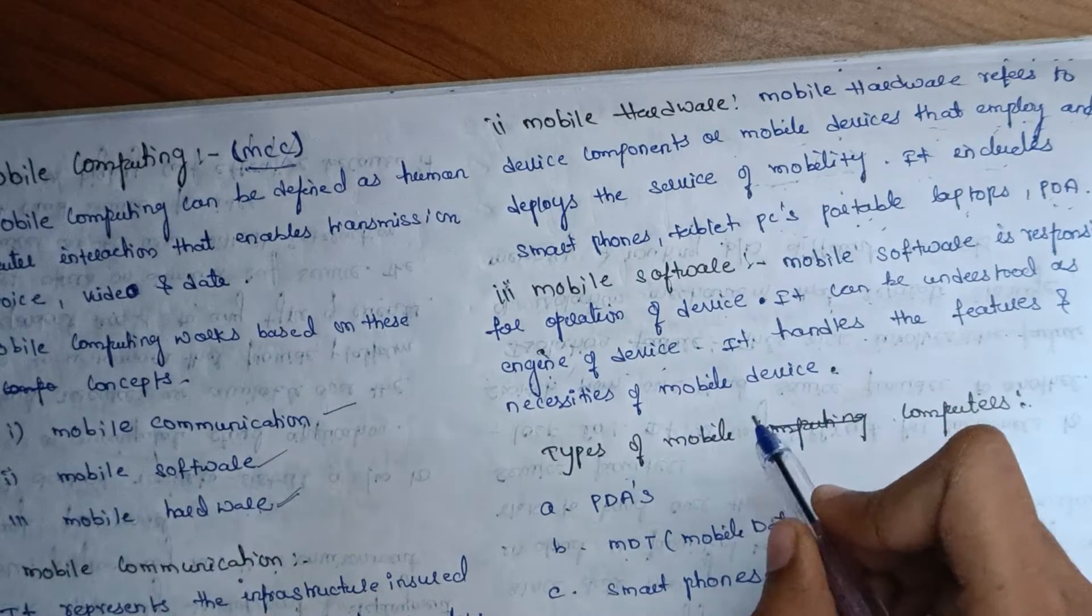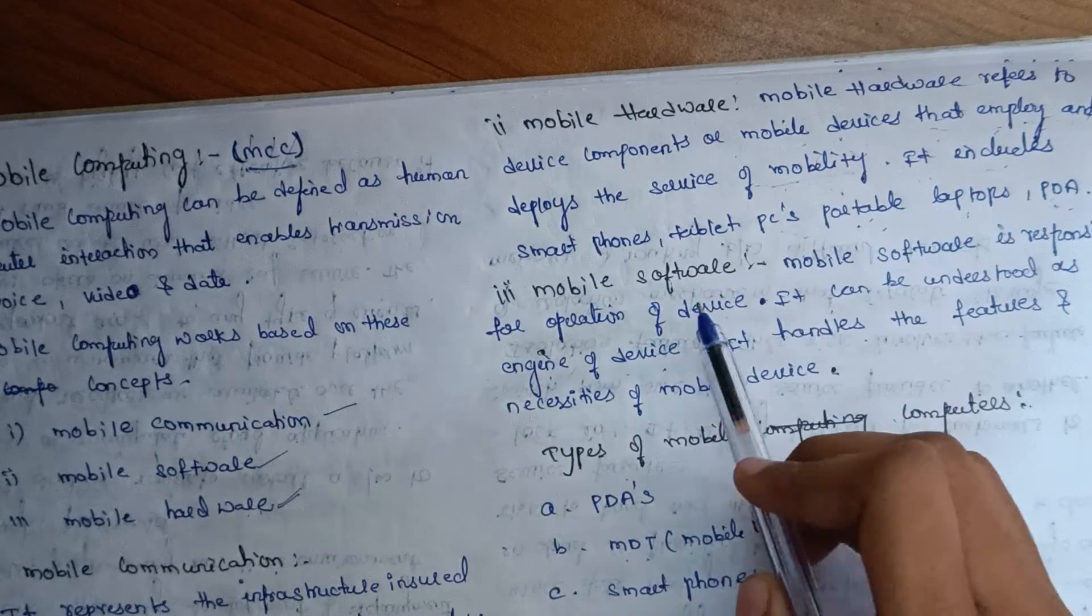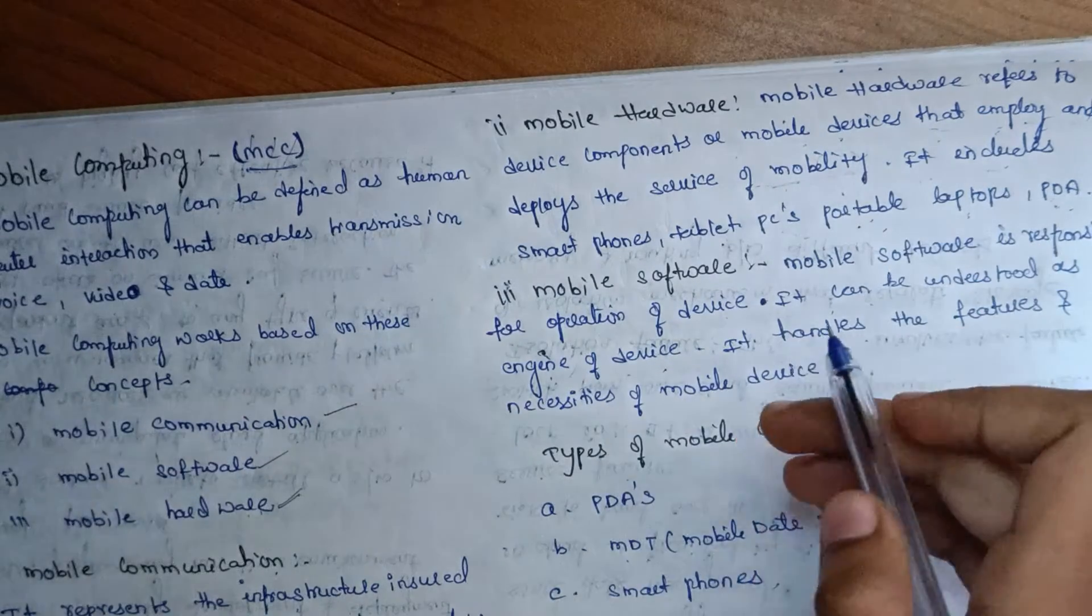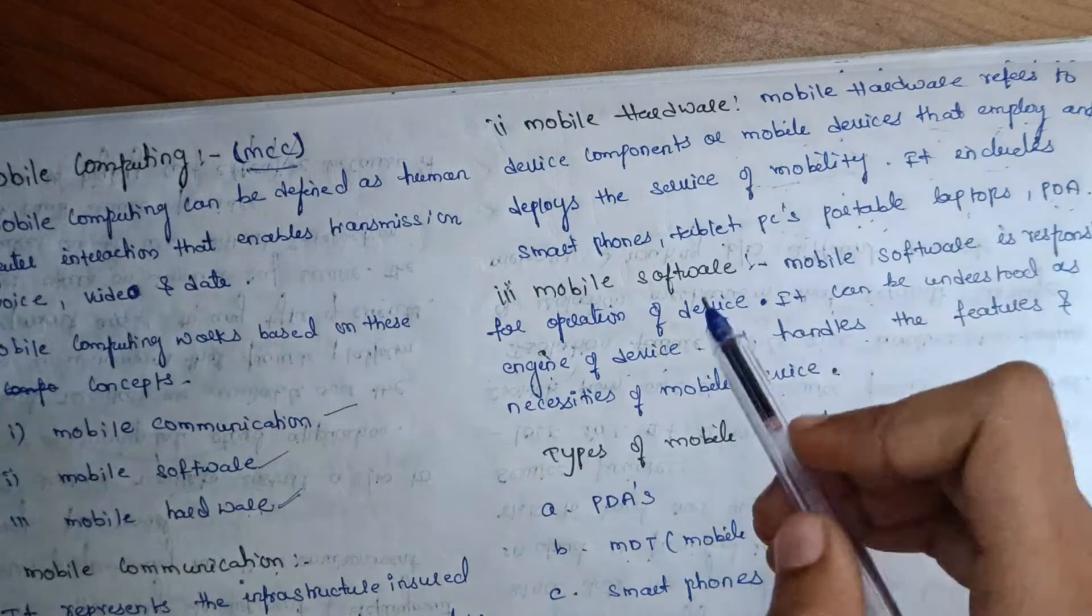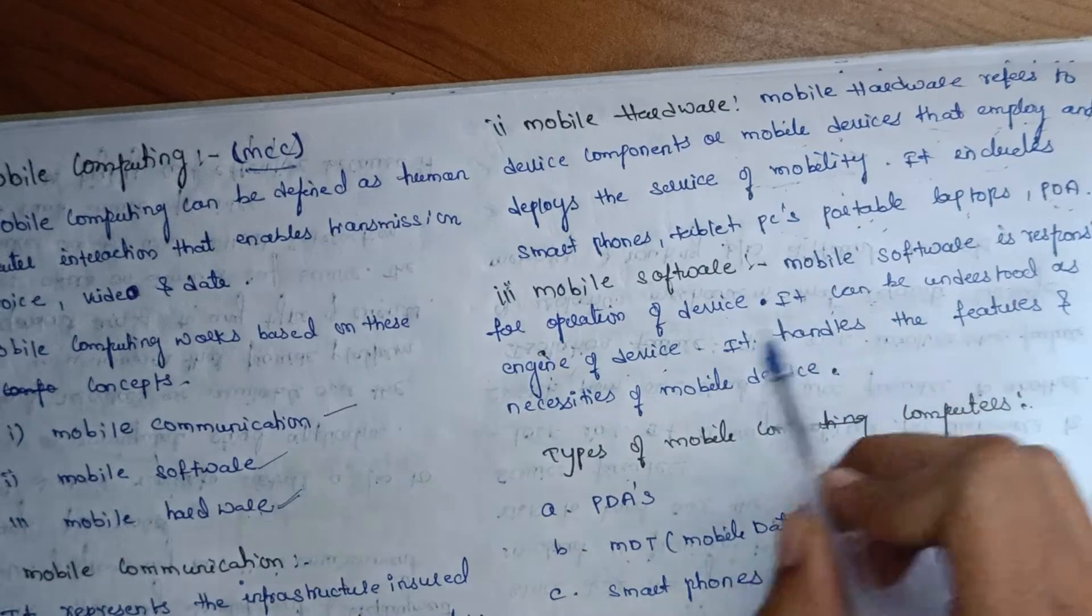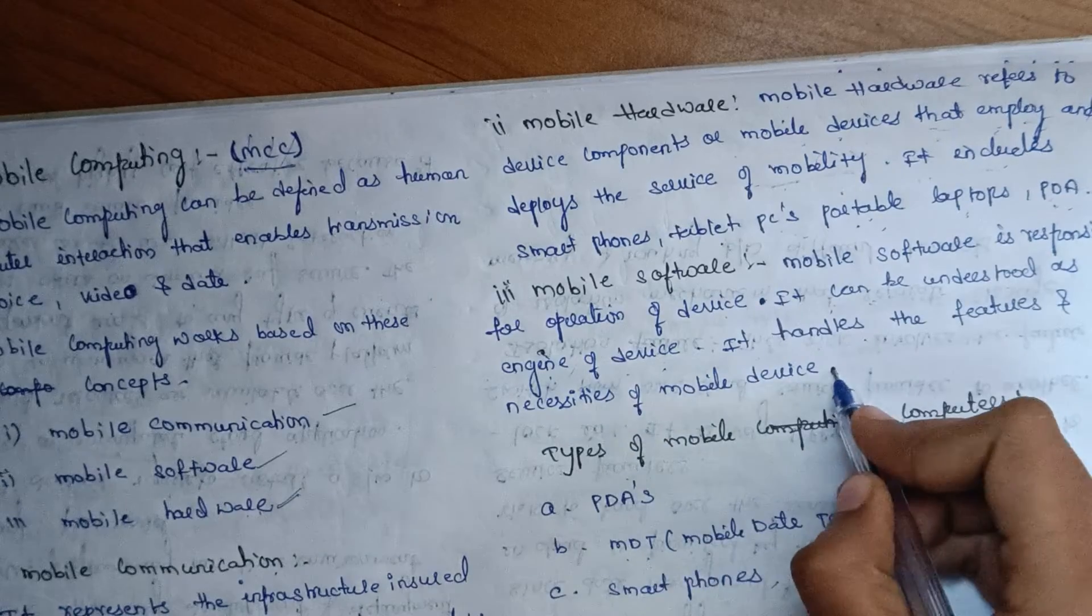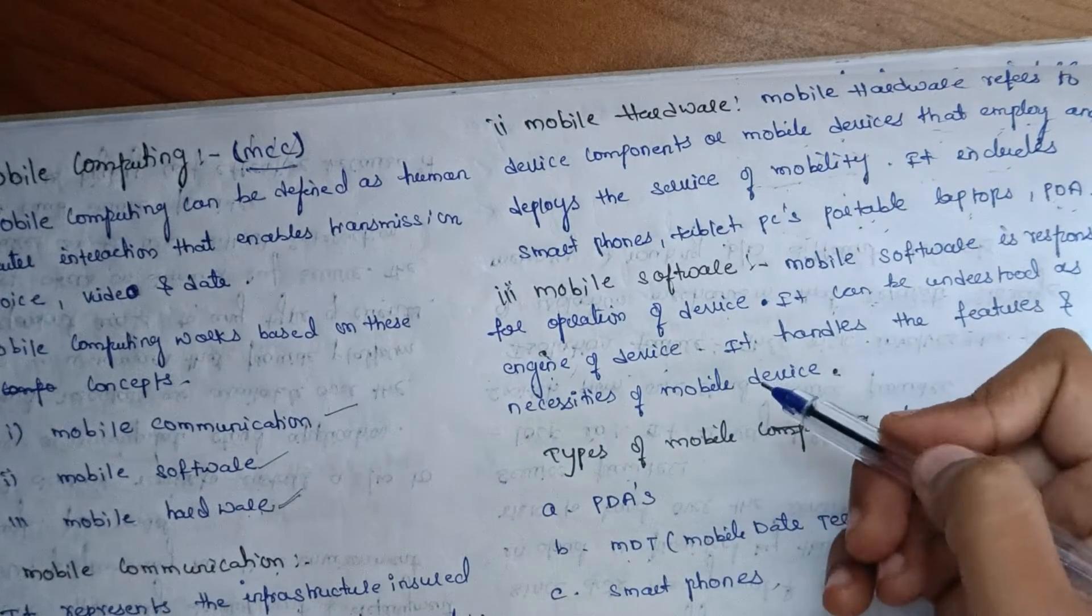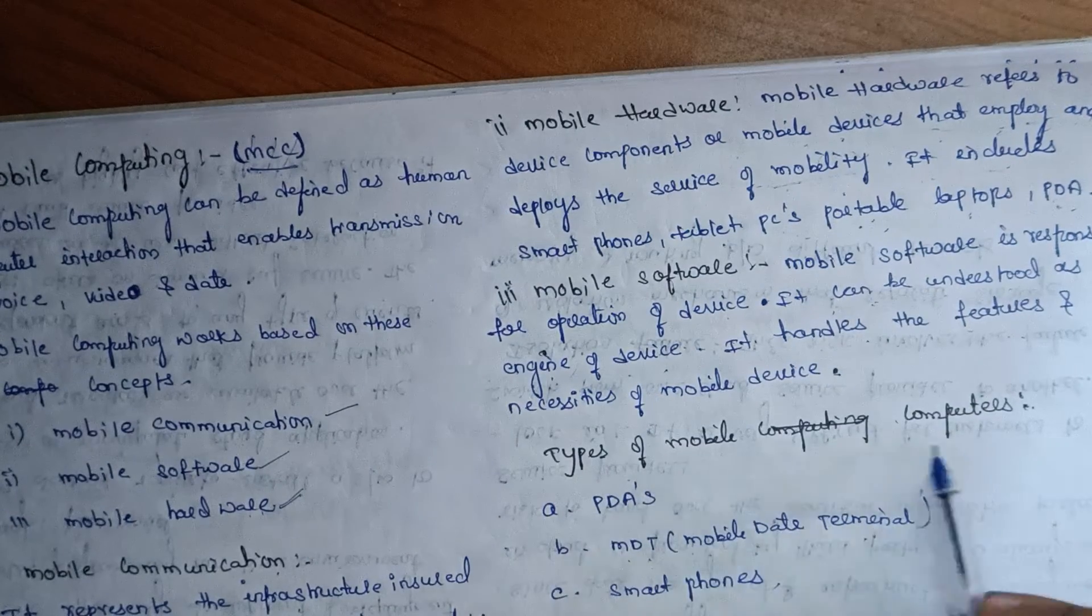Mobile software is responsible for operation of the device. Software can be understood as the engine of a device—it handles the features and necessities of mobile devices, including functions and operating systems.